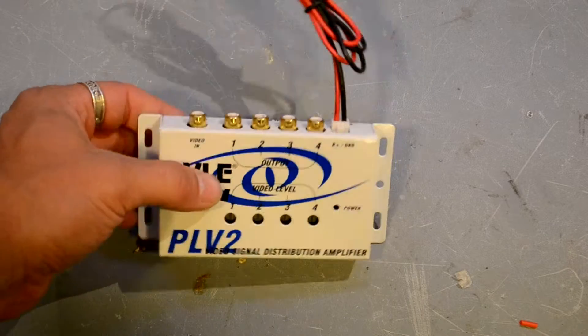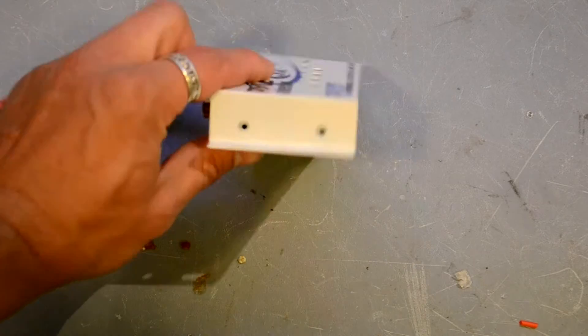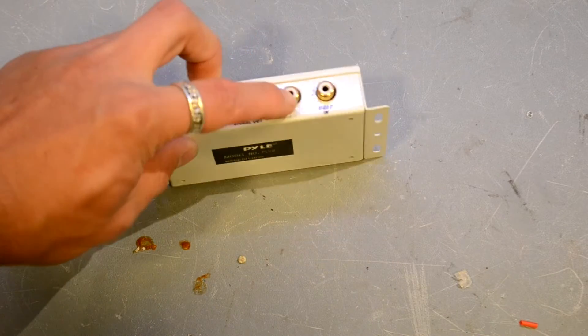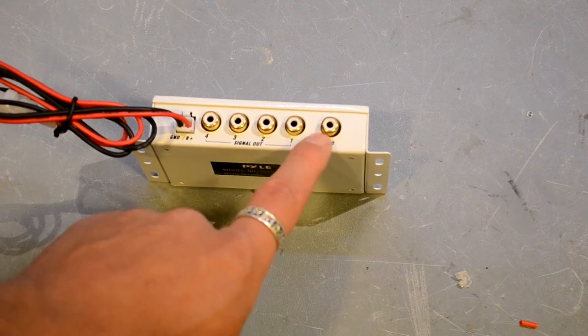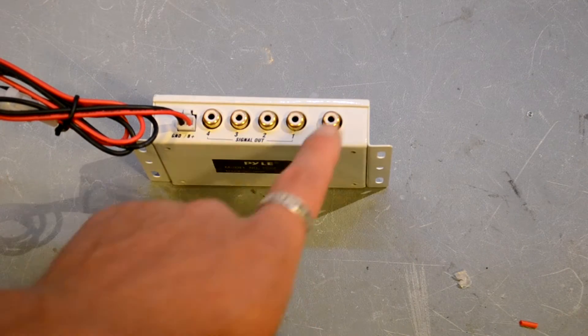First of all, what is this thing? Well, it's very simple - it's a video distributor. There's your video input from your FPV receiver, you just plug it in there.